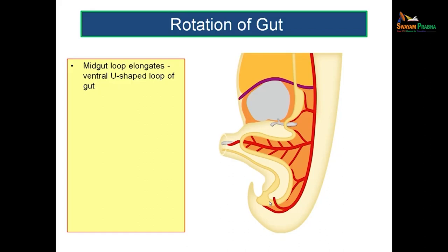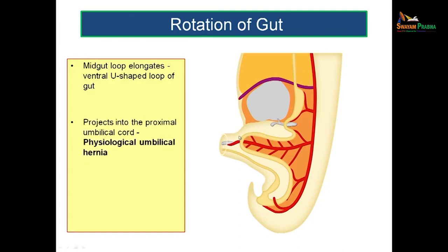Now let us see how this rotation happens. In the beginning the gut was just a straight tube; then it gets coiled and goes back to its adult position. In the initial period, as a first step, the midgut forms a loop which elongates ventrally into a U-shaped loop. This could not be accommodated in the abdominal cavity because other organs are also developing. At this moment the loop herniates through the umbilicus and lies outside the abdominal cavity. This loop projects into the proximal part of the umbilical cord, and this process of herniation — which is meant for the good of the fetus — is known as the physiological umbilical hernia.